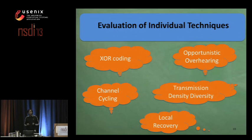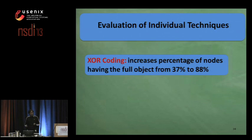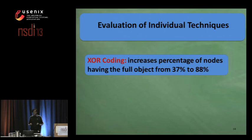We also evaluated the contribution of each individual technique used in SPLASH. To summarize, XOR coding increases the percentage of nodes having the full data object from about 37% to a significant value of 88%.